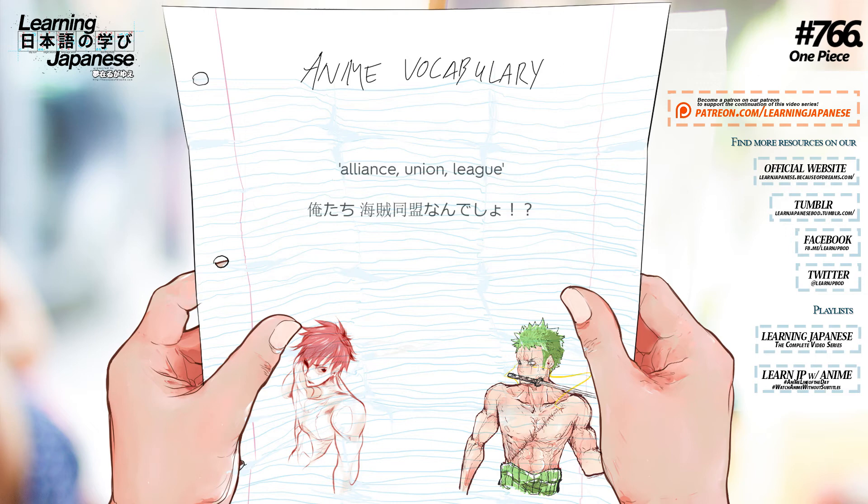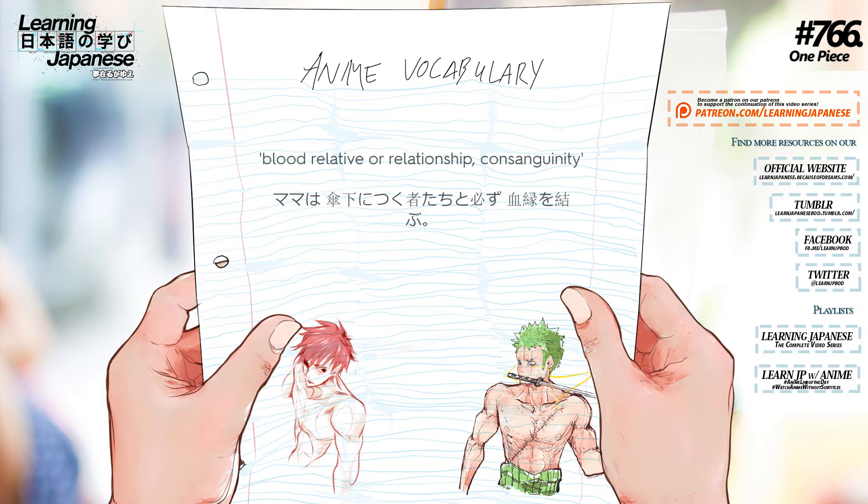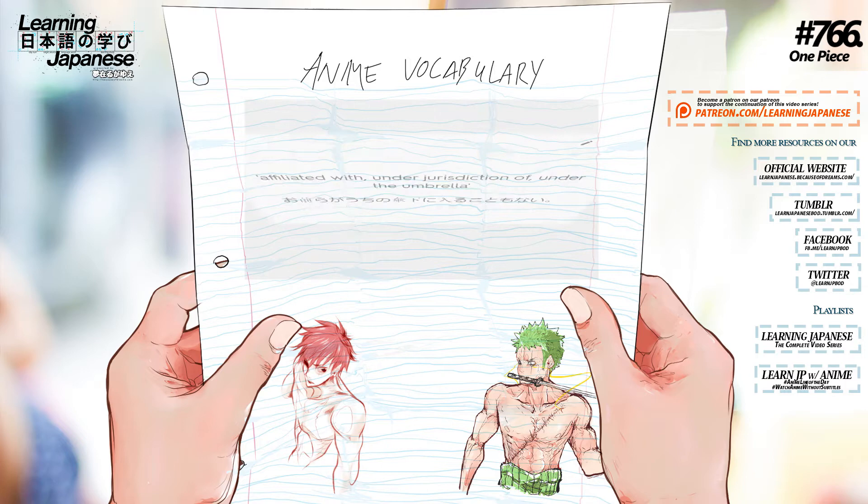Sagi — Uproar. Disturbance. Kinkyuji Tai — State of Emergency. Residency. Ketsuin — Blood relative or relationship, consanguinity. Sanka — Affiliated with, under jurisdiction of, under the umbrella.